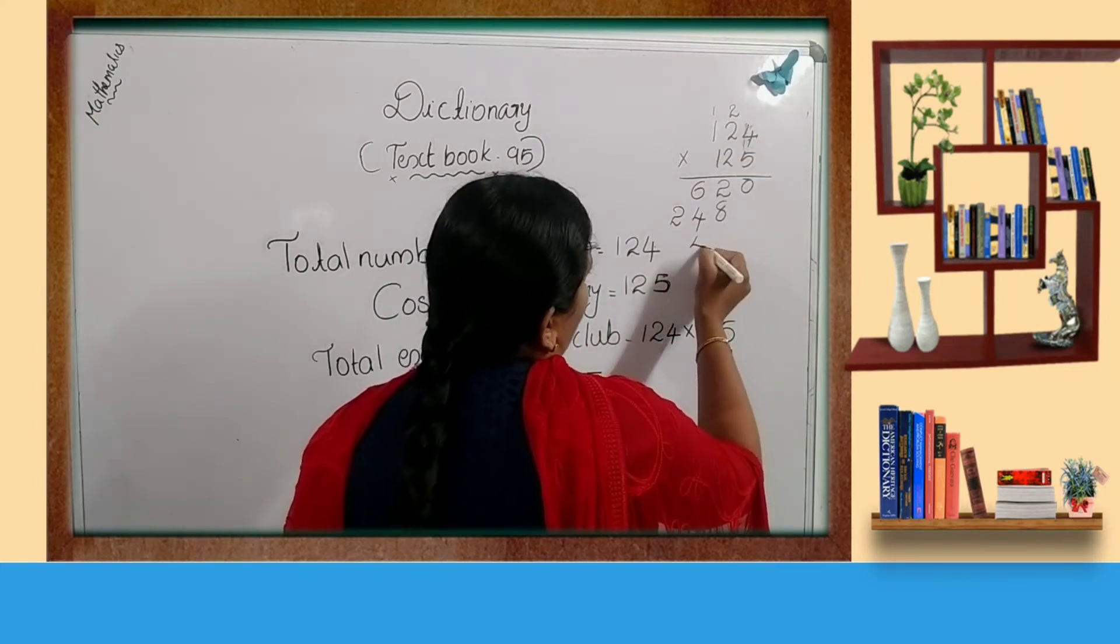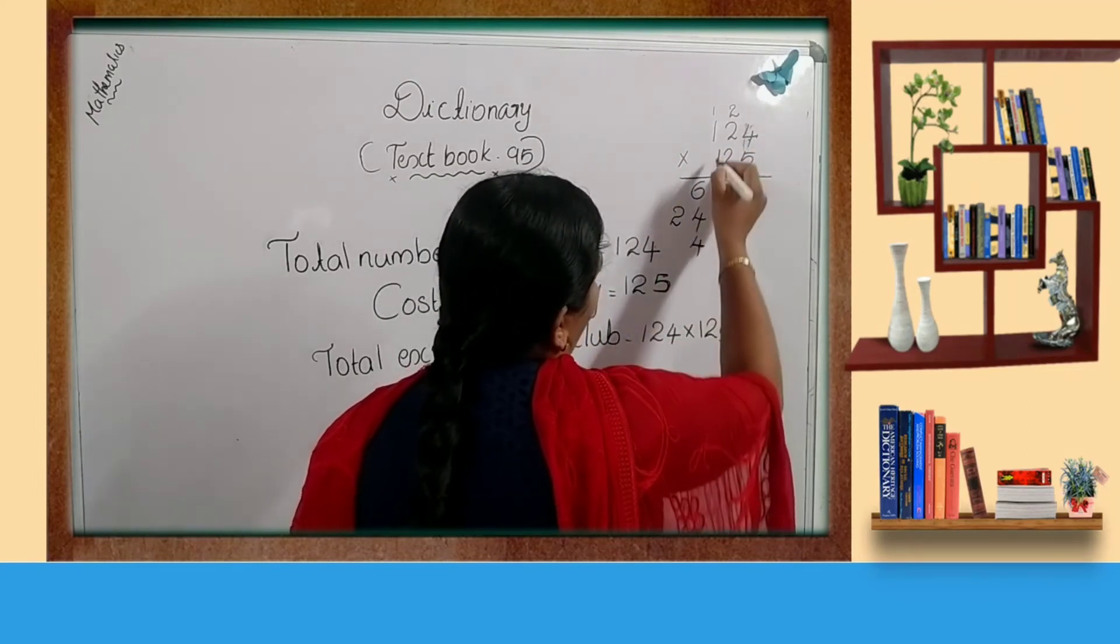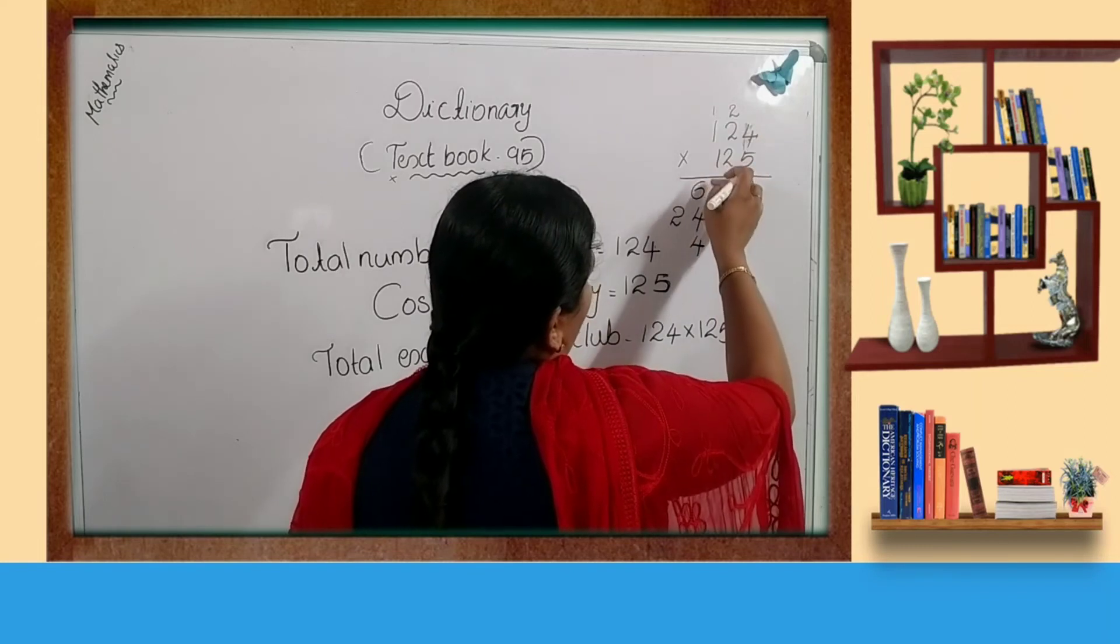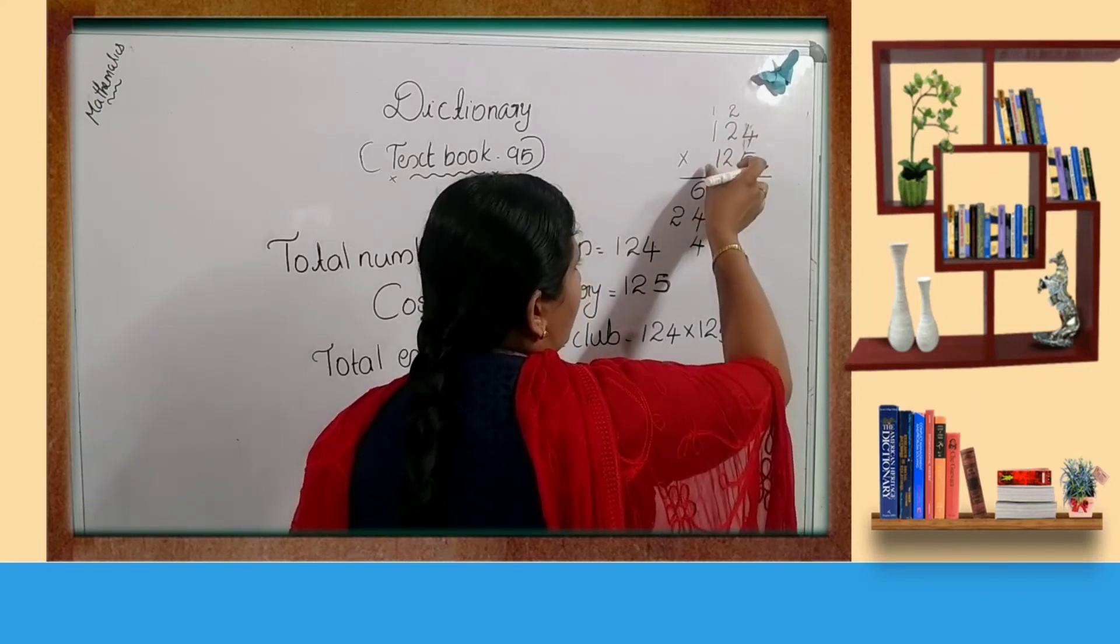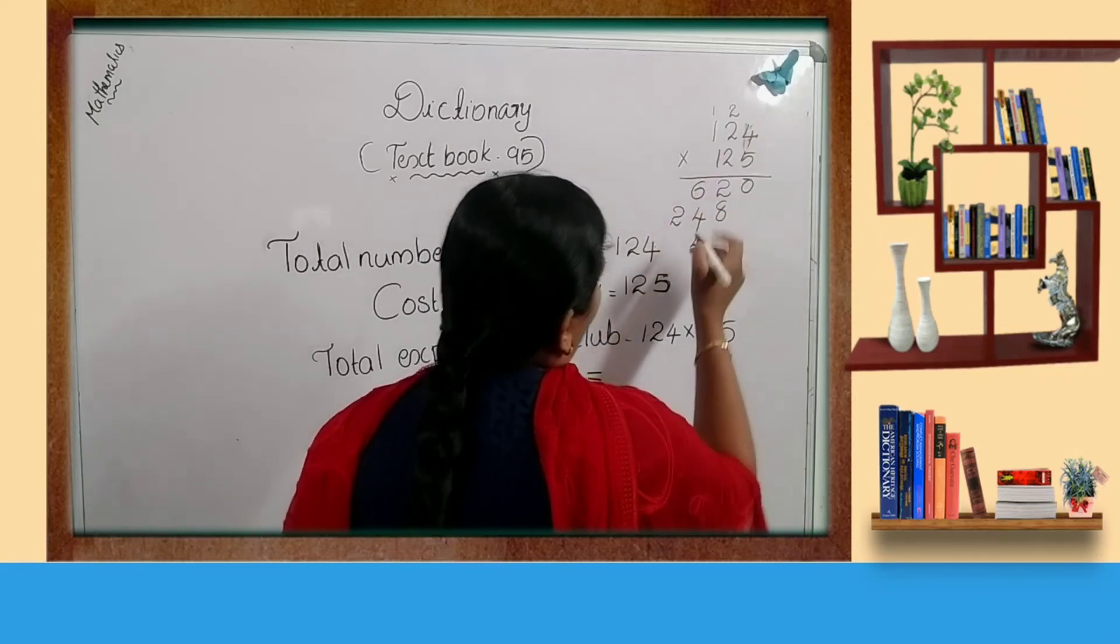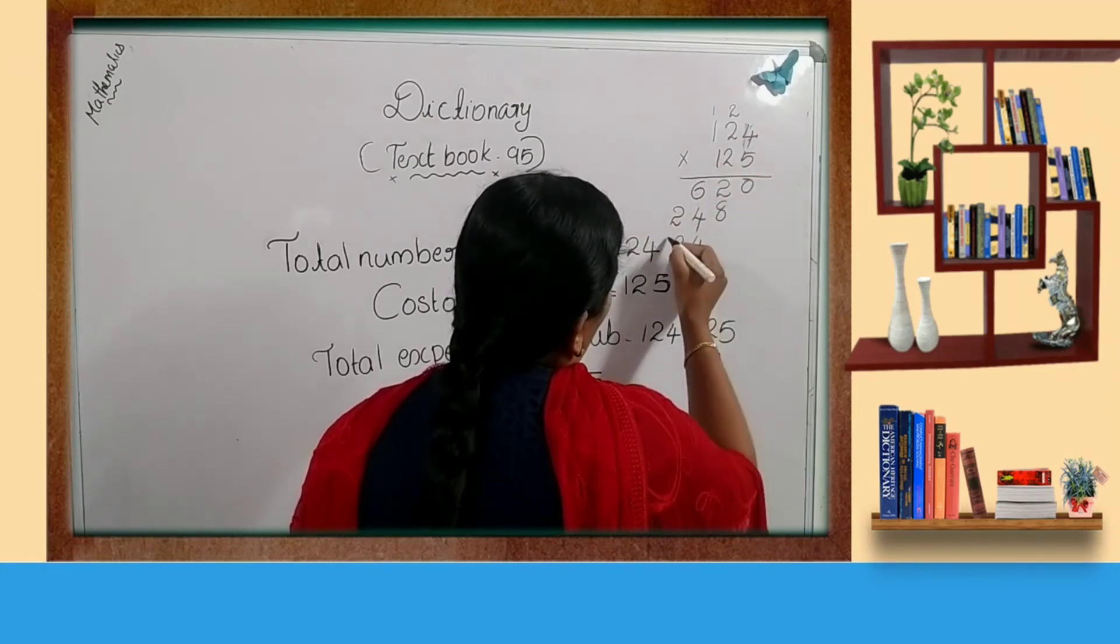1 multiplied by these 3 numbers. 1 fours are 4. We want to write the 100 places. This is 100 now. So let's start from here. 1 twos are 2, 1 ones are 1.